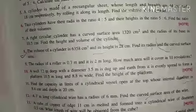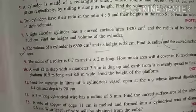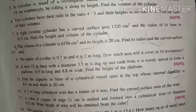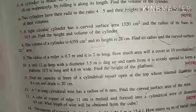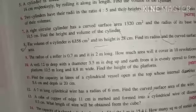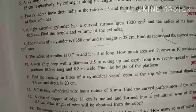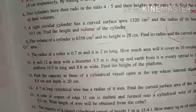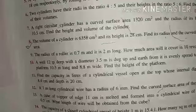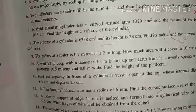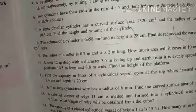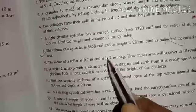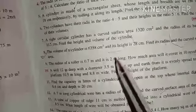Number 9: The radius of a roller is 0.7 meter and it is 2 meter long. How much area will it cover in 10 revolutions? Okay, the radius of roller is 0.7 meter and it's 2 meter long. 2 meter long means this is the height of the roller. The roller is cylinder shape, so 2 meter long is the height of the roller. Radius r is given.